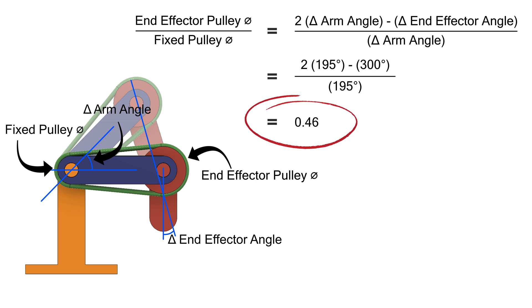which means that the sprocket on the robot will be larger than the sprocket on the end effector. If it were greater than 1, you'd have just the opposite.